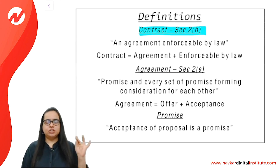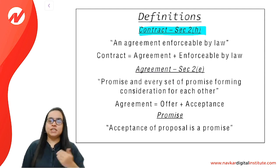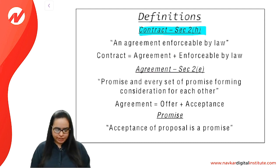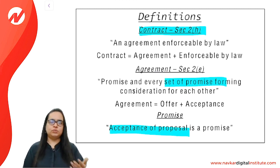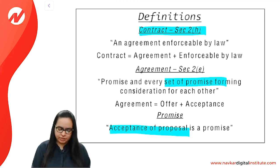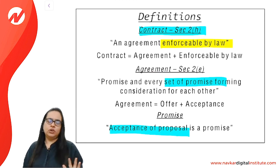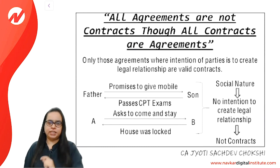How do you define a contract? Section 2H: an agreement which is enforceable by law. When A makes an offer and B accepts, a promise is created. A set of promises, if a legal relationship comes, then it becomes a contract. So first, the acceptance of the proposal means the offer is accepted, then a promise is created. When it is enforceable by law, it becomes a contract. Remember: all contracts are agreements, but not every agreement becomes a contract.